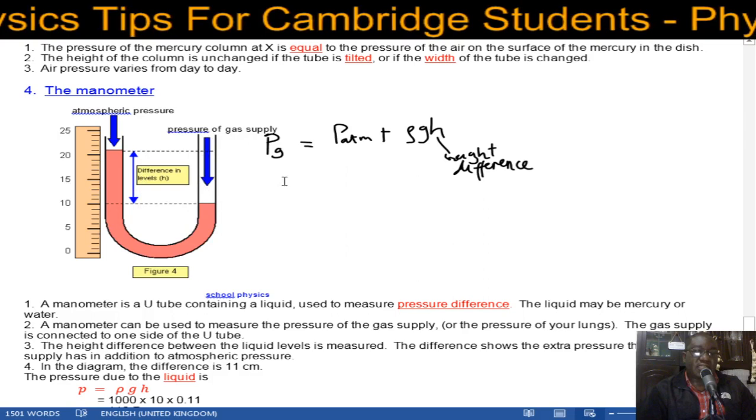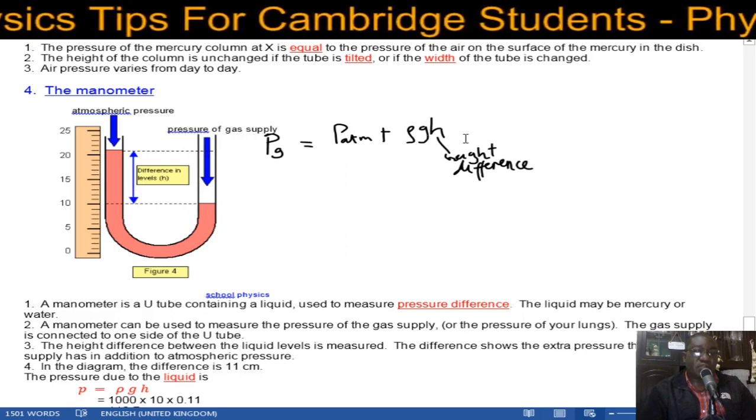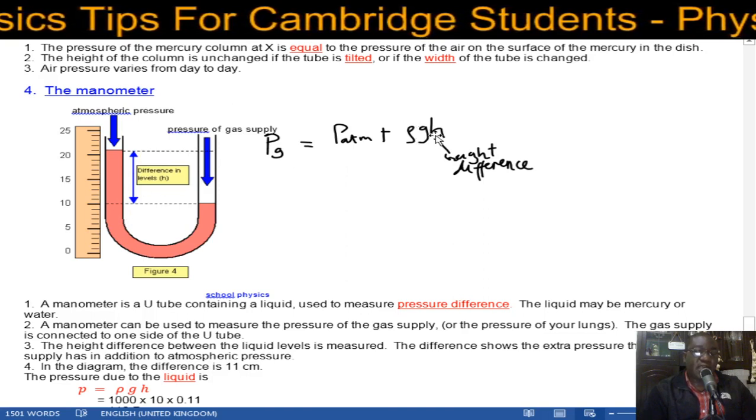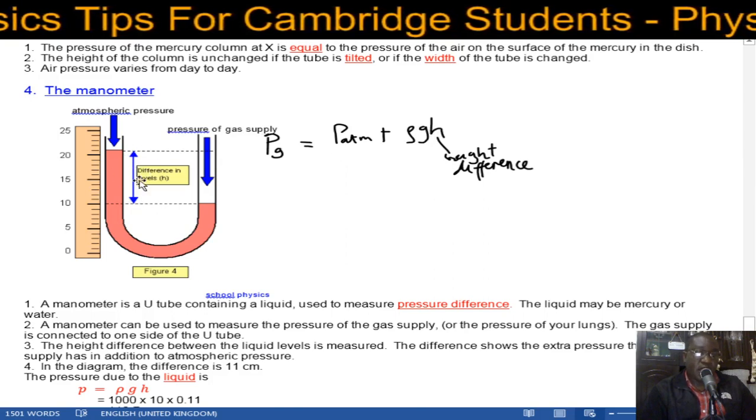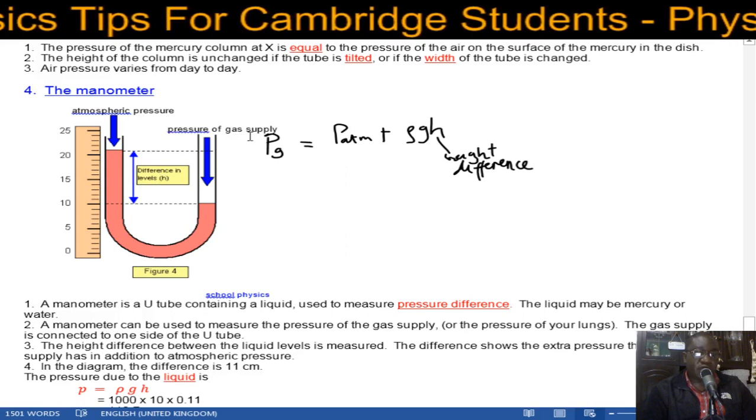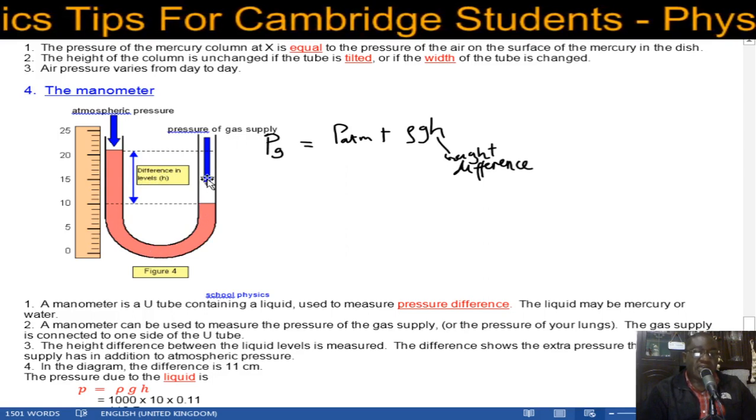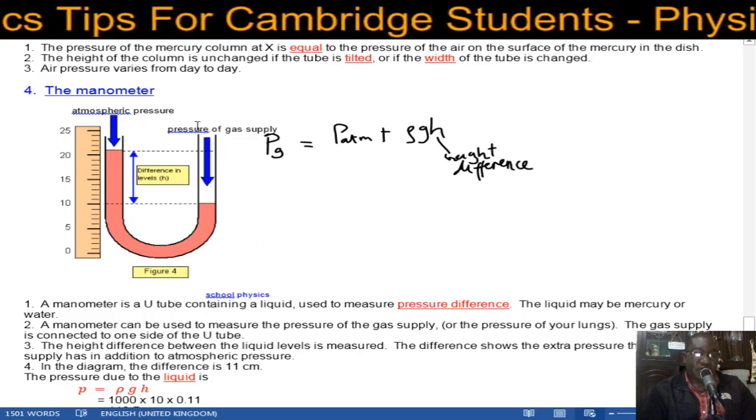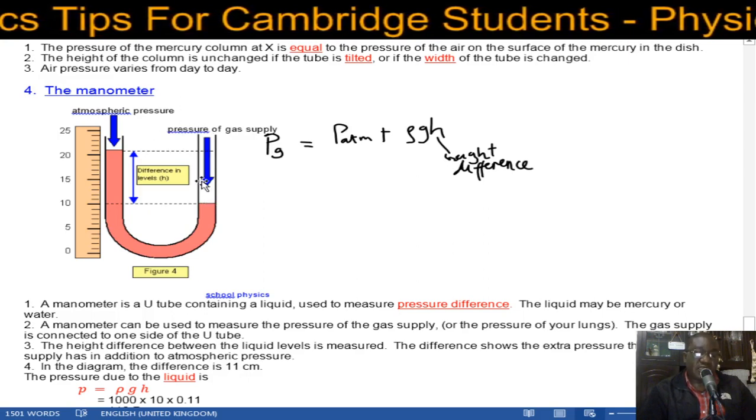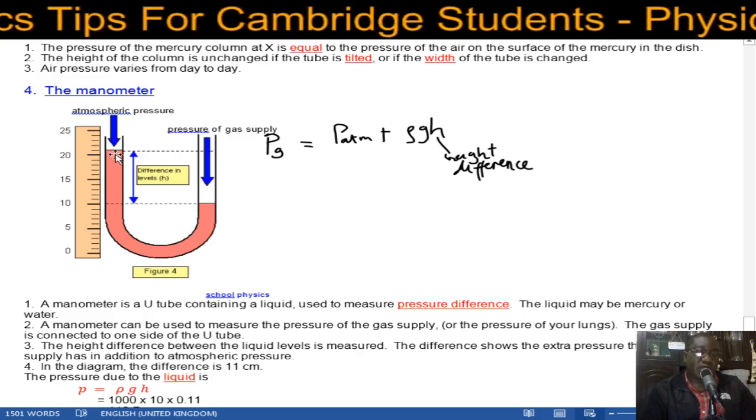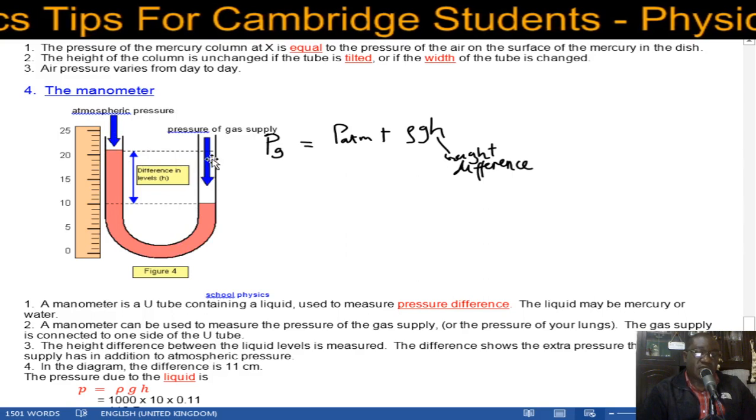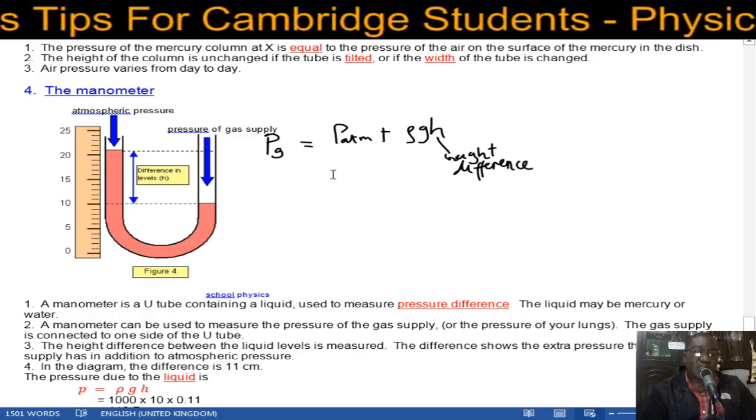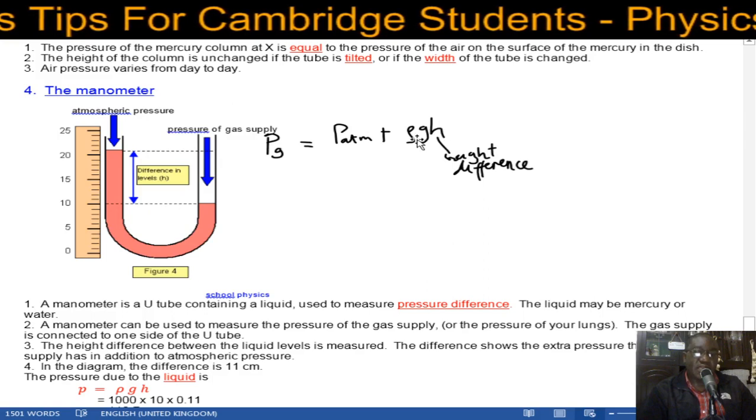Finding the pressure of the gas is simple. You just say atmospheric pressure plus rho gh, where h is the height difference. Rho is the density of the liquid, g is 10, and h is the height difference created there. Now remember, for the gas to push the liquid level downwards, its pressure must be greater than atmospheric. That's why we are adding atmospheric pressure to it. To push this downwards you need a pressure which is greater than atmospheric pressure. That's why we are saying atmospheric pressure plus pressure due to the height difference.